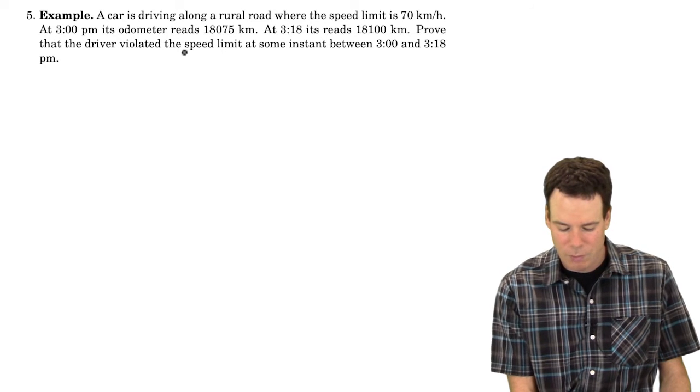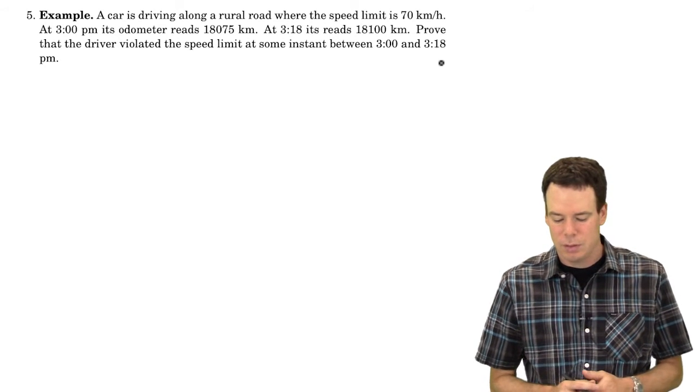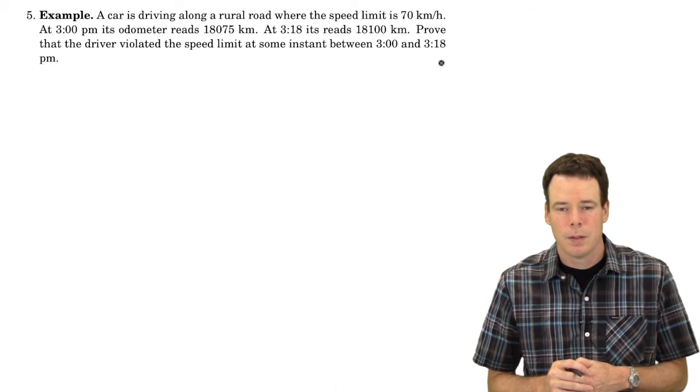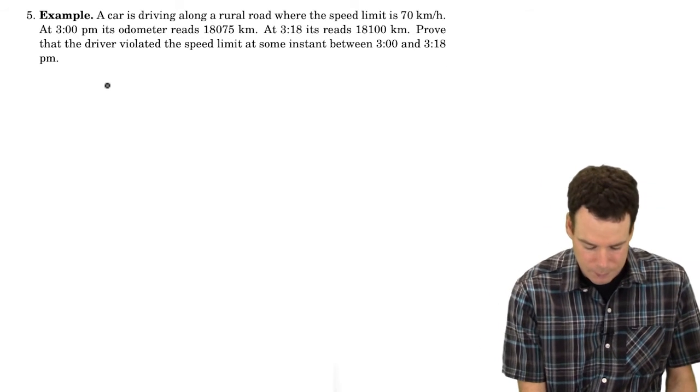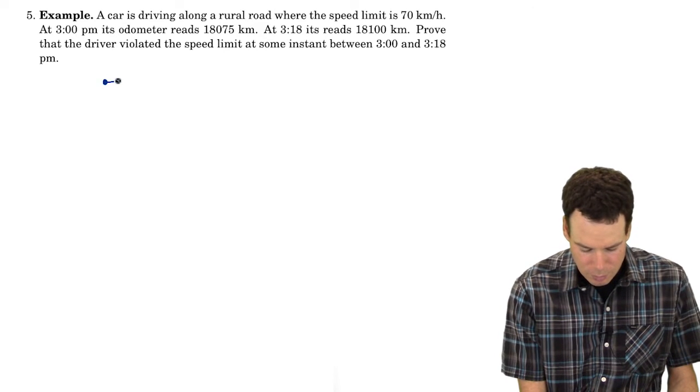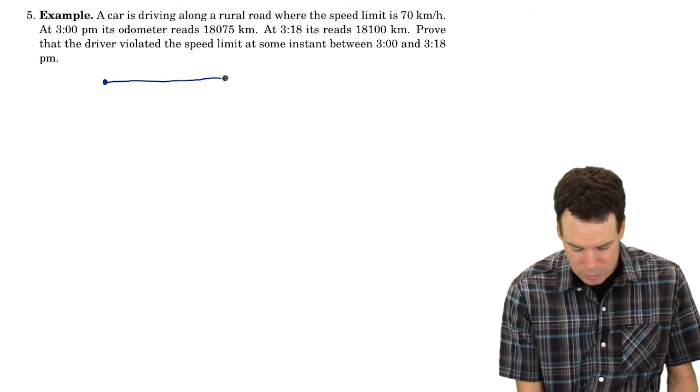We're going to prove that the driver violated the speed limit at some instant between 3:00 and 3:18. So what do we have here? Well, let's see why the mean value theorem has any business cropping up here.